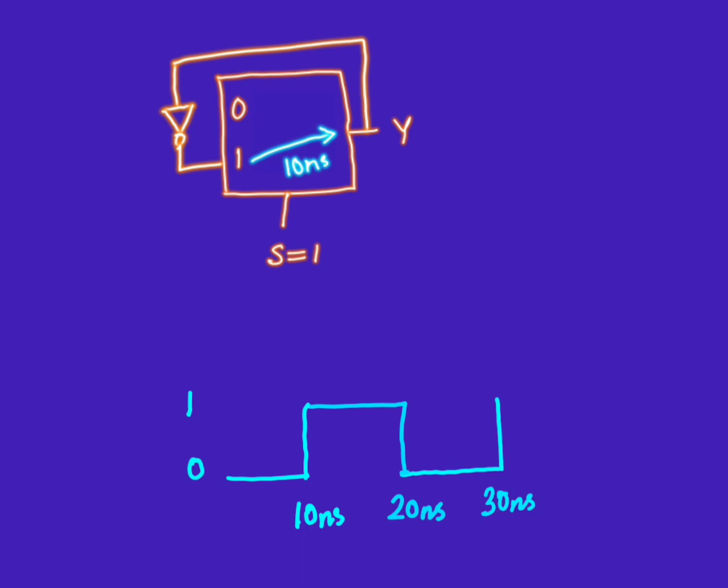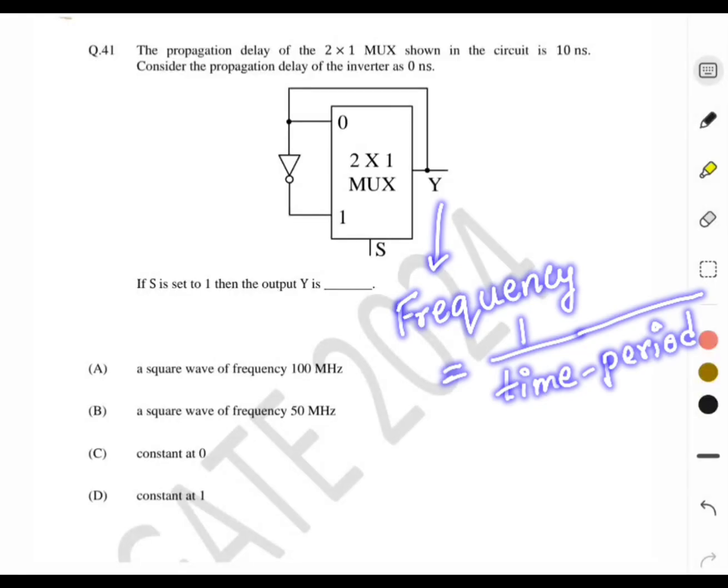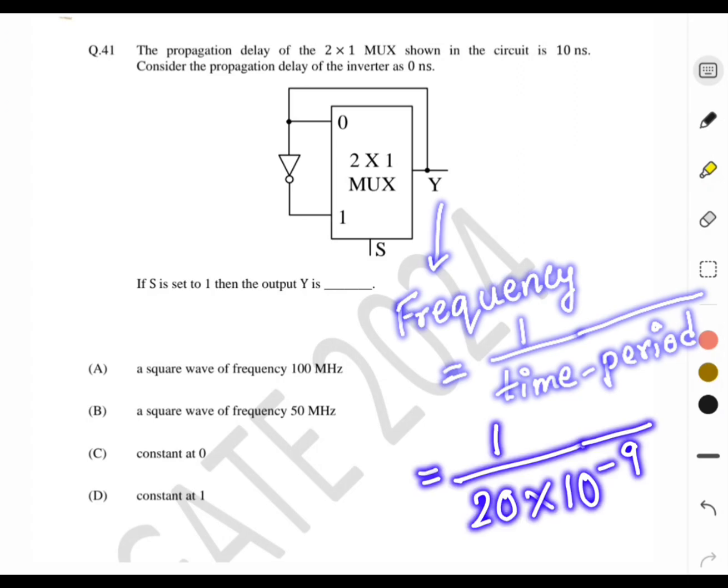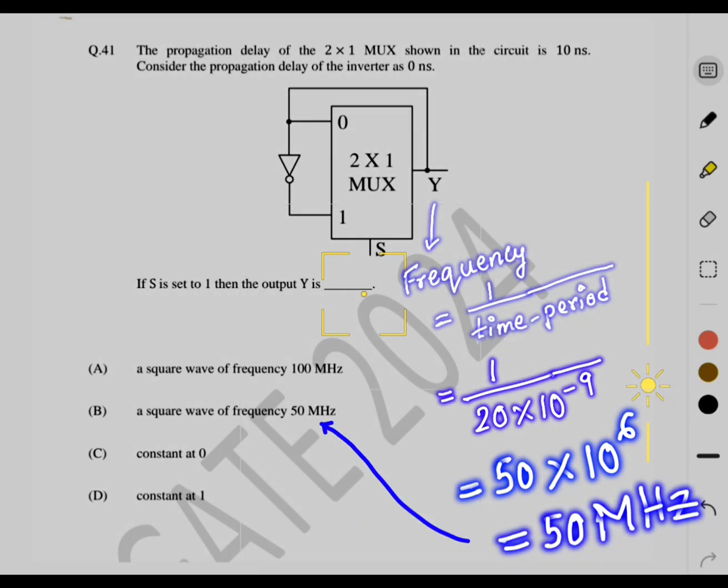From the waveform it is evident that the period of this square waveform is 20 nanoseconds. As we know that frequency is the reciprocal of the time period, the time period is 20 nanoseconds. If we calculate it, we will get a frequency of 50 megahertz. So our final answer is option B, a square wave of 50 megahertz.